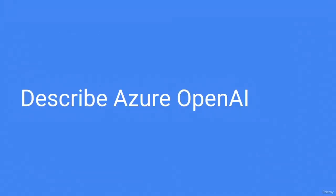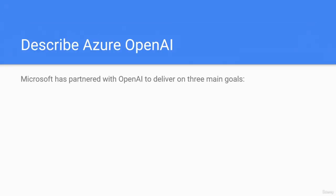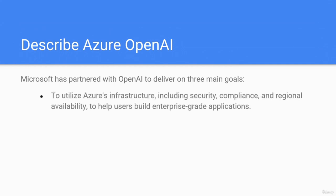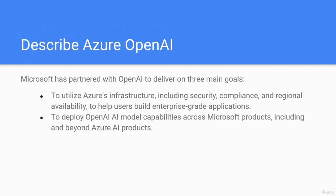Describe Azure OpenAI. Microsoft has partnered with OpenAI to deliver on three main goals: to utilize Azure's infrastructure including security, compliance, and regional availability; to help users build enterprise-grade applications; to deploy OpenAI model capabilities across Microsoft products including and beyond Azure AI; and to use Azure to power all of the OpenAI workloads.